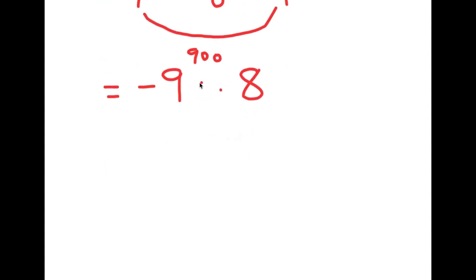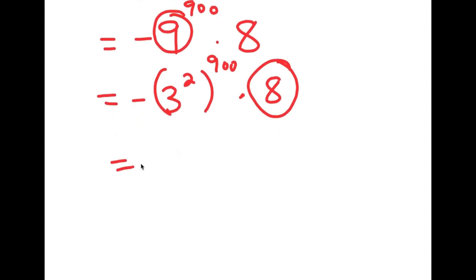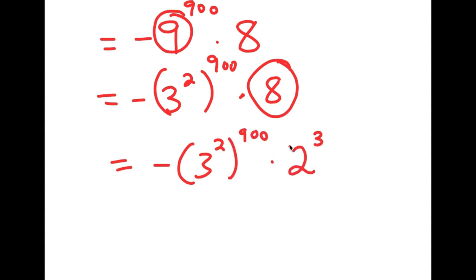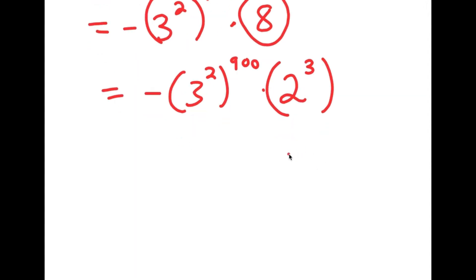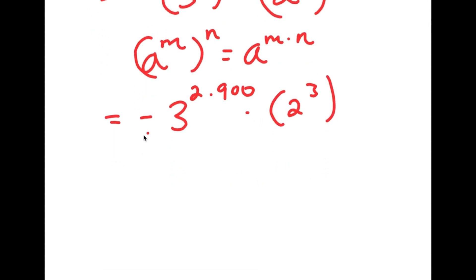From here I can rewrite 9 as 3 squared, so I get negative 3 squared to the power of 900 times 8. And 8 I can rewrite as 2 to the power of 3, so I have negative 3 squared to the power of 900 times 2 to the power of 3. Using the rule that a to the power of m to the power of n equals a to the power of m times n, this becomes negative 3 to the power of 2 times 900 — which is 1800 — times 2 to the power of 3, giving negative 3 to the power of 1800 times 8.